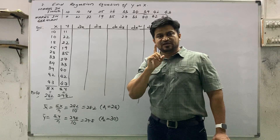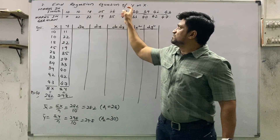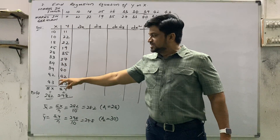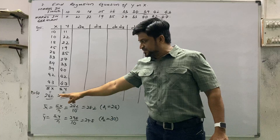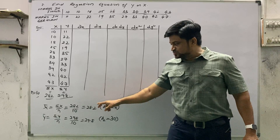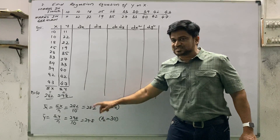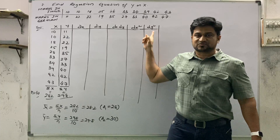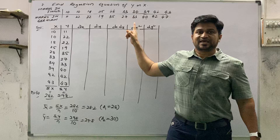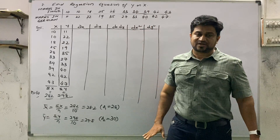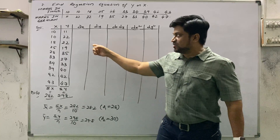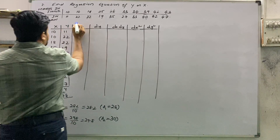In any regression equation method — whether finding regression equation of Y on X or X on Y — first write columns X and Y in capital letters, then find sigma X and sigma Y, then find X-bar and Y-bar. Once we see decimal values in the means, we take dx, dy, dx·dy, dx², dy². Here dx = X minus A1, and dy = Y minus A2.